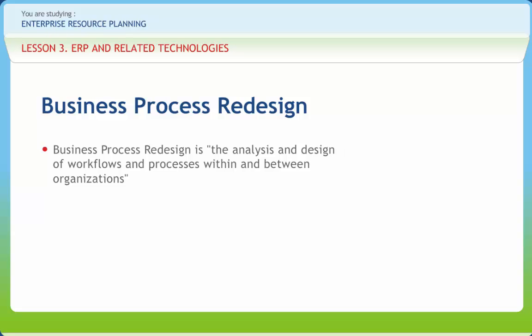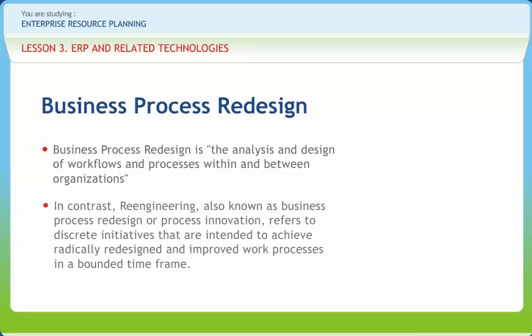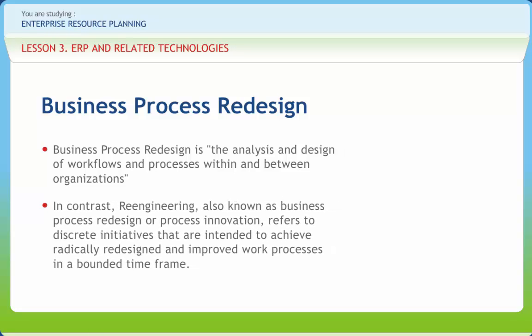Total Quality Management, TQM, or continuous improvement refers to programs and initiatives that emphasize incremental improvement in work processes and outputs over an open-ended period of time. In contrast, re-engineering, also known as business process redesign or process innovation, refers to discrete initiatives that are intended to achieve radically redesigned and improved work processes in a bounded timeframe.